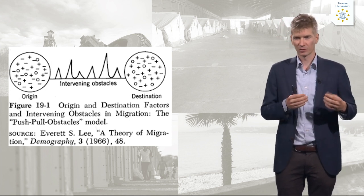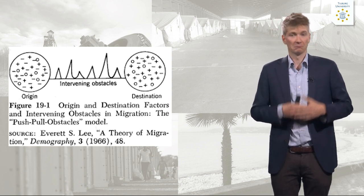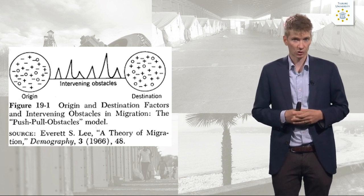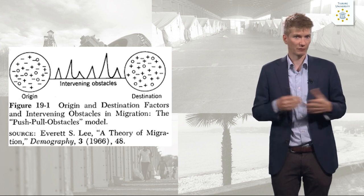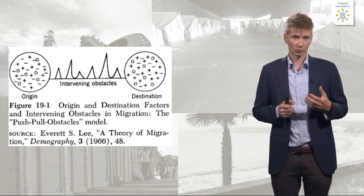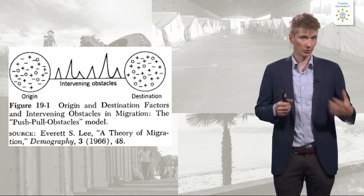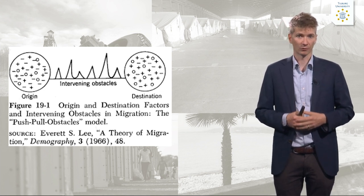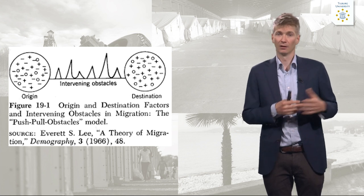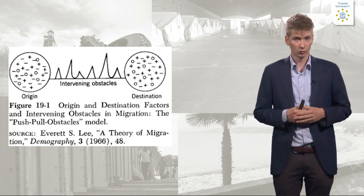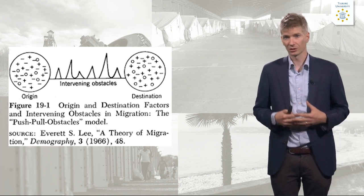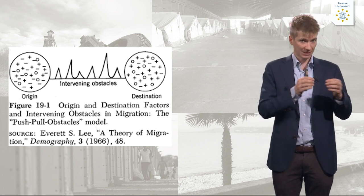If pull factors worked the same for everyone, then you would say that everybody needs to move out of Ukraine when the war started — which of course did not happen. Or when you see desertification in Africa, some people will move but others will remain. Lee indicated that personal characteristics play a role: generally, people who move are younger, while older people are more likely to remain. Gender also matters depending on the migration flow. Socio-economic status is important too, since migration is always a costly enterprise, and how much money you have determines whether you can move or not.